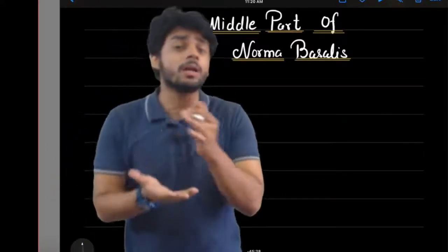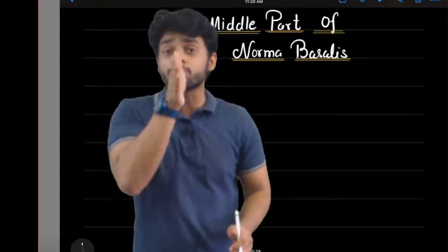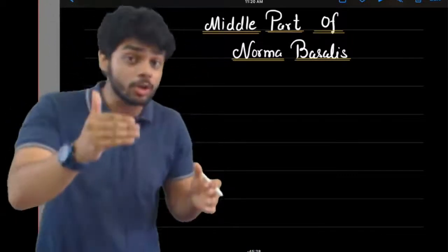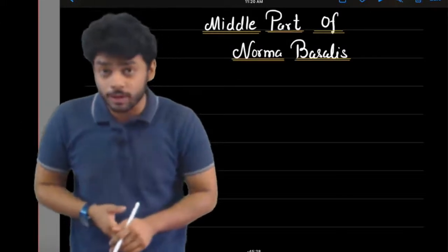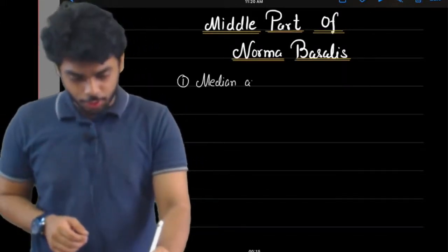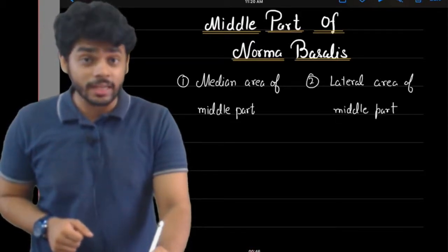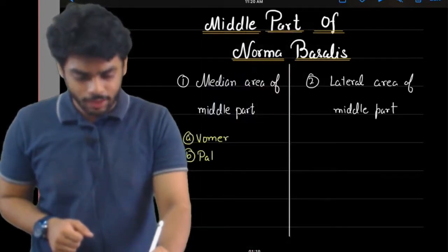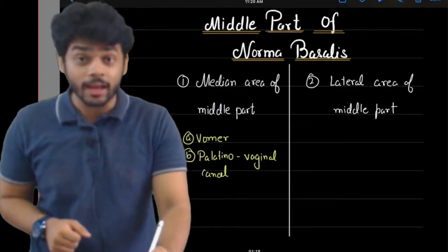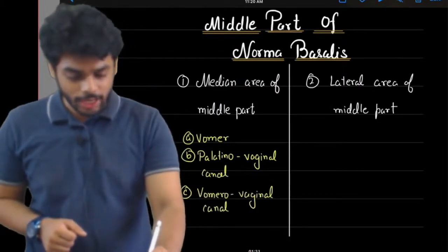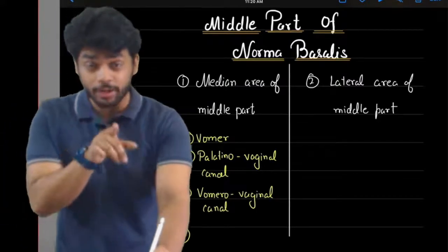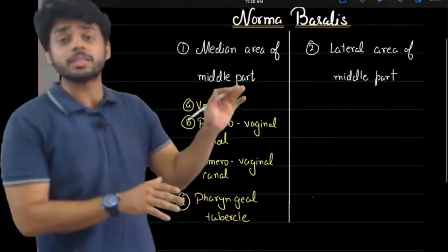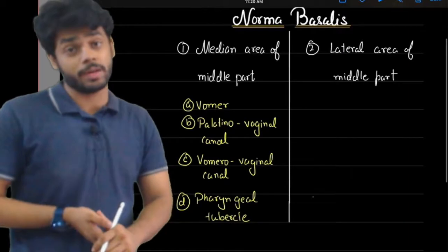In the median area, the structures we can see are: first, the posterior border of the vomer bone; second, a broad bar made up of the body of the sphenoid as well as the occipital bone. The median area also consists of vomer, canals known as palatinovaginal canal and vomerovaginal canal, and lastly the pharyngeal tubercle.